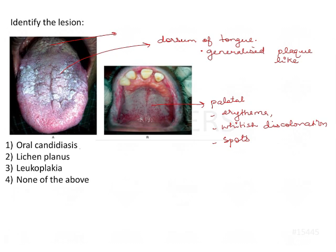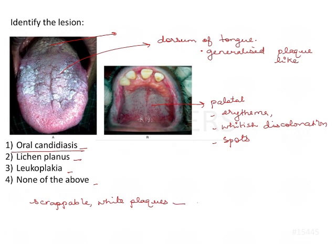Let's have a look at the options: oral candidiasis, lichen planus, leukoplakia, and none of the above. Let's try to eliminate options one by one. For oral candidiasis, features include scrappable lesions, white plaques, and nodular kind of growth can also be seen.